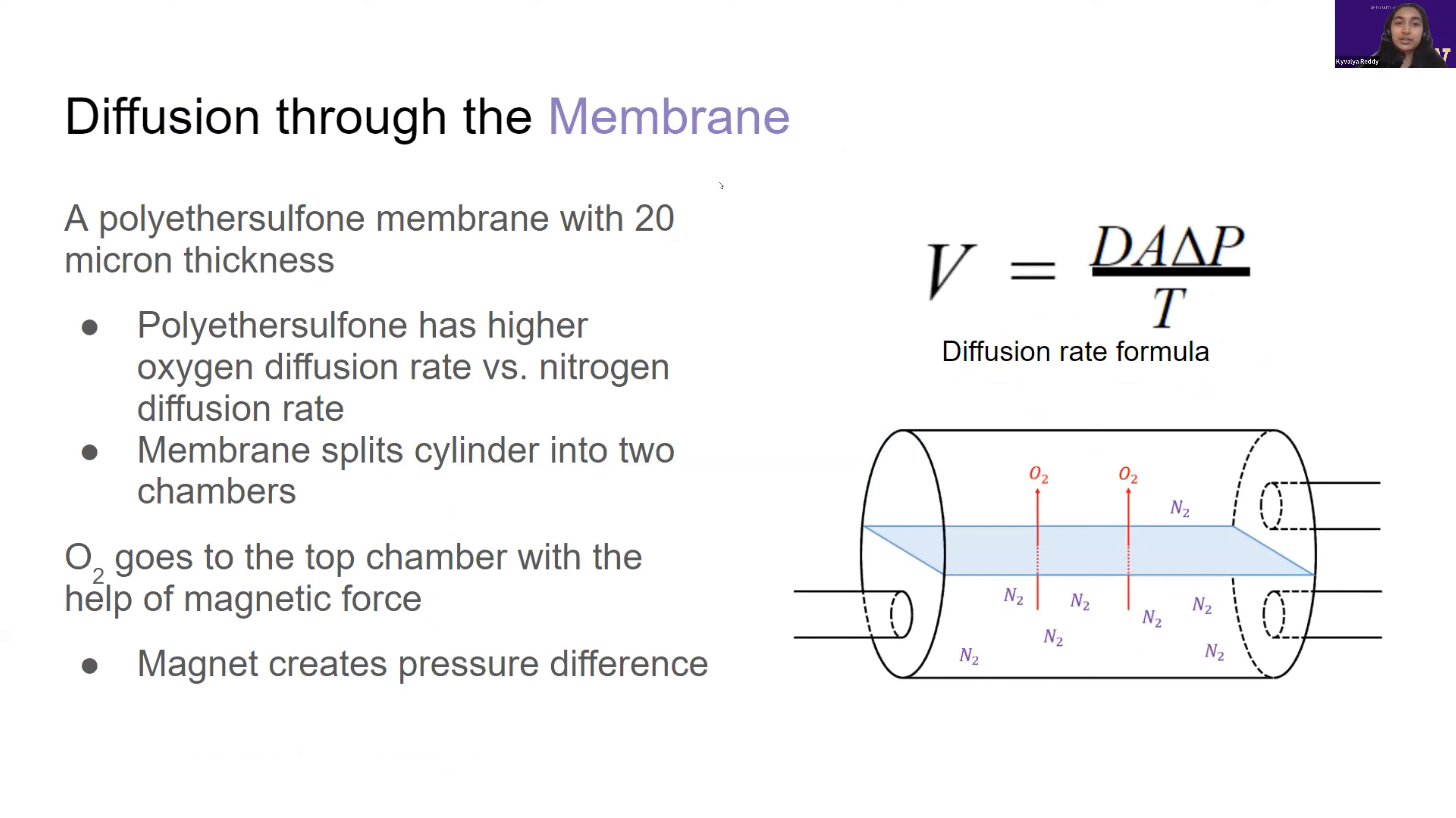To go into more detail about the membrane, we decided to use a polyether sulfone membrane with a thickness of 20 microns. The reason we decided on this material is because out of all the polymer membranes that we researched, it had the highest ratio of the diffusion coefficient for oxygen to nitrogen. The membrane splits the cylinder into two chambers, and the oxygen goes to the top chamber with the help of the magnetic force, which creates the pressure difference.